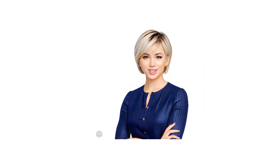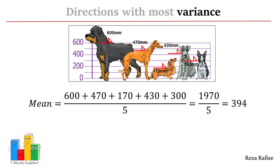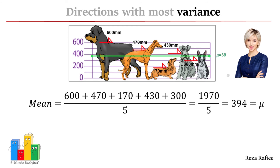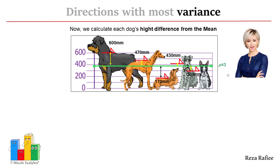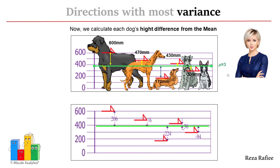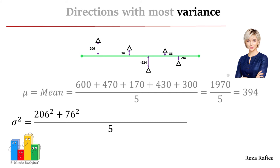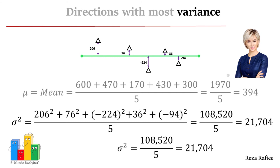Variance, which is a crucial metric, shows us how much the heights of these five dogs differ from their average height. To calculate it, we first find the average height of these dogs. Then, for each dog's height, we measure how far it is from this average, square that difference, add up all these squared differences, and find their average. This gives us the variance, which reveals the spread or difference in these heights from the average.